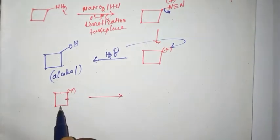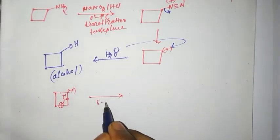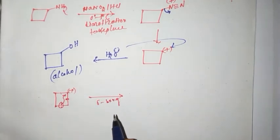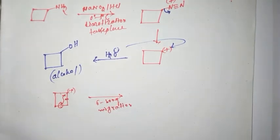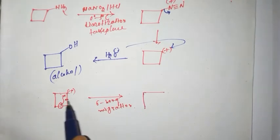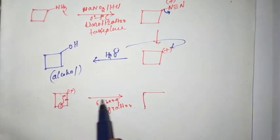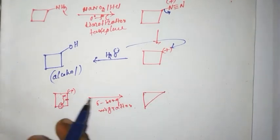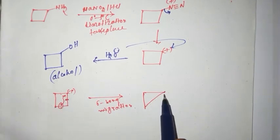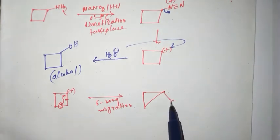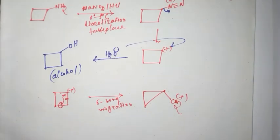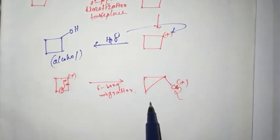Now, this sigma bond breaks. Sigma bond migration occurs. This 4-member ring is converted to 3-member ring and this carbocation is formed.